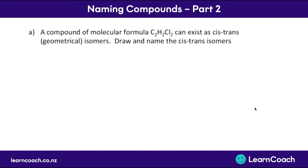Let's look at some NCA questions. This one has two parts. First, we have a compound of molecular formula C2H2Cl2 — two carbons, two hydrogens, and two chlorines. It can exist as cis, trans, or geometrical isomers. So we need to draw and name these two. There's always going to be a double bond with cis and trans isomers, so we draw our two carbons with a double bond as our first step. And we also know there are two Cls and two hydrogens that are going to be attached somehow.